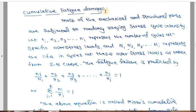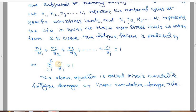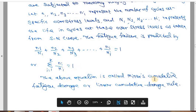For cumulative fatigue damage, suppose a member is subjected to variable stress cycles of intensity n_1, n_2, n_3, n_4, and the number of cycles to failure at each stress level are N_1, N_2, N_3, N_4. Fatigue failure is predicted when n_1/N_1 + n_2/N_2 + n_3/N_3 + ... = 1, or as a summation from i=1 to k of n_i/N_i = 1. This is the Miner's rule, also called the linear damage rule.